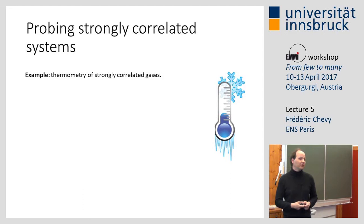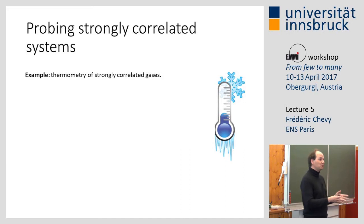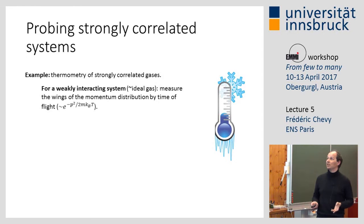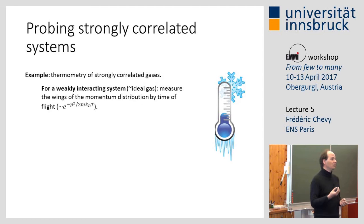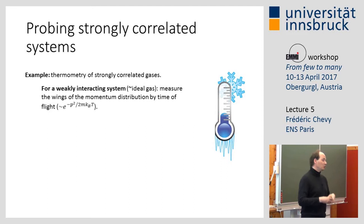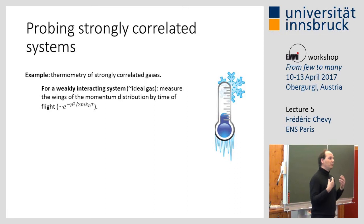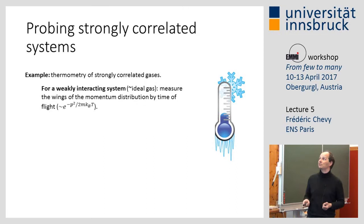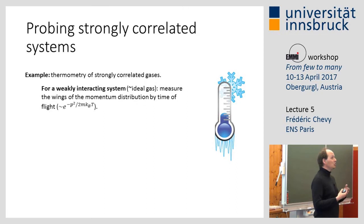I would like to illustrate that on a very simple problem: the thermometry of a cold atom system. If you are dealing with a weakly interacting or ideal gas, it's straightforward. You perform a time-of-flight expansion — you take your system, turn off the trap, and let the cloud expand. With very weak or no interactions, the momentum of the atoms stays constant during expansion. After a given time of flight, the density profile is just a rescaled copy of the momentum distribution. Whether you're dealing with Boltzmann particles, fermions, or bosons, the wings of the momentum distribution are given by a Gaussian: exp(-p²/2mkBT). By making a Gaussian fit to the wings, you have access to the temperature.